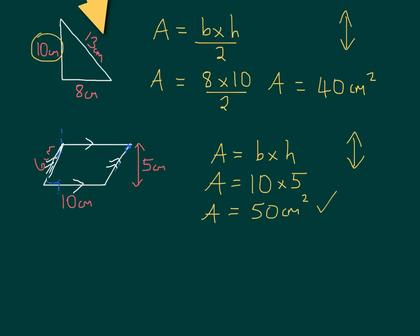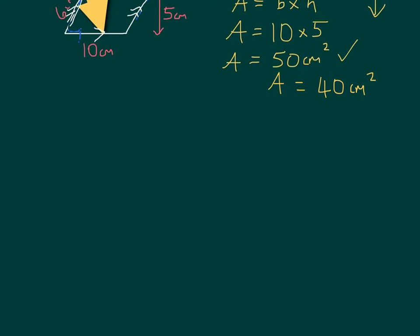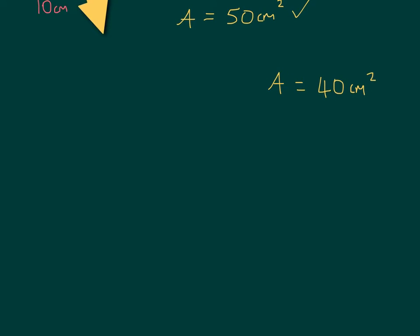Okay, there's another shape that you might need to know the area for. And that is a trapezium. So, a trapezium is a four-sided shape, which contains two parallel lines. So, this line here is parallel to this line.